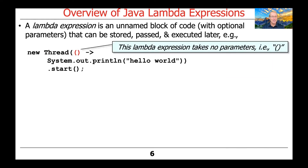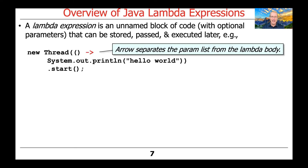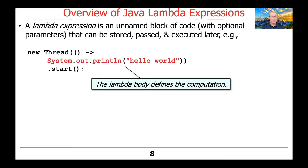This Lambda expression we're passing to the constructor of thread takes no parameters. Therefore, it has an open-closed paren as the first syntactic element, highlighted here in red. Next, we see an arrow. The arrow is used to separate the parameter list — or, in this case, the null parameter list — from the Lambda body. The Lambda body here defines the actual computation that will be performed in the background thread we're about to start.